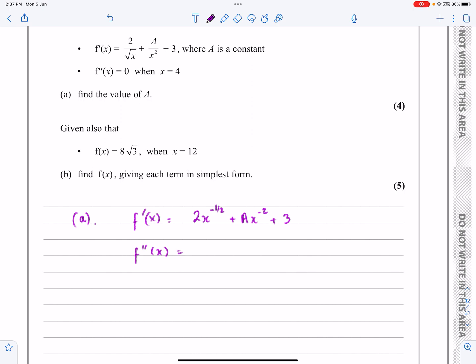So, that's multiplying by the power and taking 1 off the power. 2 times minus 1/2 gives me minus 1. Taking 1 off the power there, x to the minus 1/2, with 1 taken off of that, becomes x to the minus 3/2.